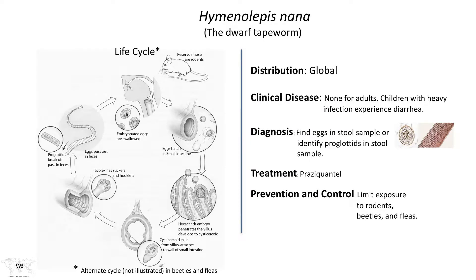Beginning with the egg: the egg is swallowed, the hexacanth larva hatches out of the egg, and then it penetrates the villus where it undergoes development to the next stage — the immature tapeworm. The immature tapeworm then attaches to the wall of the small intestine, and the scolex, which contains suckers and hooklets, develops proglottids. That may take three to four months, just like most other adult tapeworms.